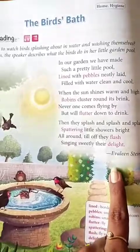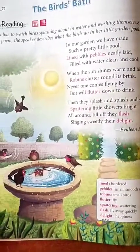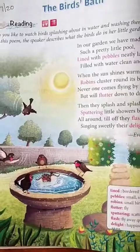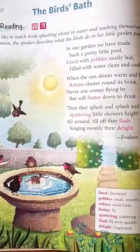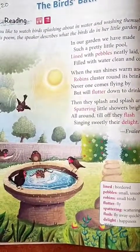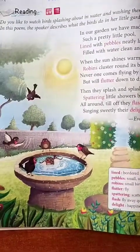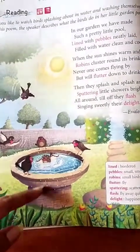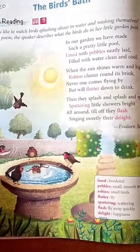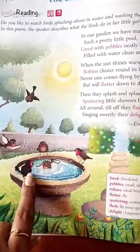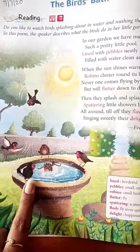Alvin Stein is the poetess of the poem. A bird's bath is a small collection of water, or a small pool of water, where birds usually gather during the summer season to drink and bathe. You can see here they are drinking water and they are bathing in the water.